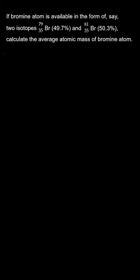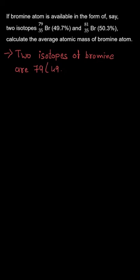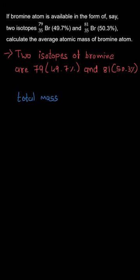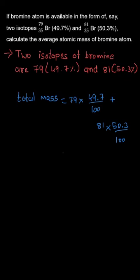To calculate the average atomic mass of bromine: the isotope with mass number 79 is 49.7% abundant and the isotope with mass number 81 is 50.3% abundant. So the total average mass is calculated as (79 × 49.7/100) + (81 × 50.3/100).